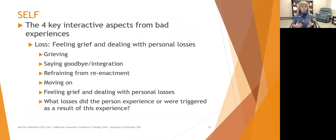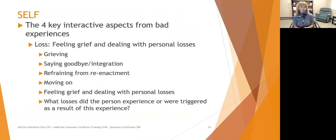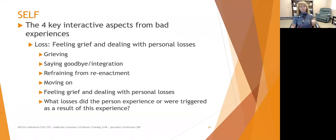Very rarely is a loss just a single loss. When we lose things, there are usually multiple losses associated with it. For example, losing a spouse means losing your best friend, the person you thought you'd grow old with, financial support — and if you lose that financial support, you may lose the house you lived in for 30 years. There can be multiple losses from a primary loss. Remember, losses can also include loss of self-esteem or loss of hope. We want to help people identify how to deal with these losses, feel the grief, and work through that a dream is gone — so what do I do now?